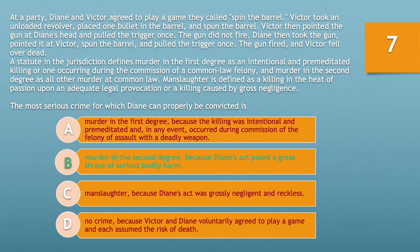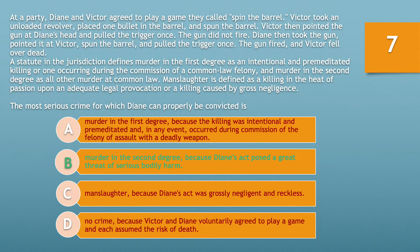If you chose option B — murder in the second degree, because Diane's act posed a great threat of serious bodily harm — you'd be correct. At common law, second degree murder is the intentional killing of another person with malice aforethought. Malice aforethought requires one of the following states of mind: 1. Intent to kill. 2. Intent to commit bodily injury. 3. Depraved heart killing or wanton disregard. 4. Intent to commit a felony. In this case, Diane pointed a loaded gun at Victor and pulled the trigger. This action would clearly satisfy the requirement of a subjective awareness of an unjustified high risk to human life. As such, the most serious crime for which Diane can properly be convicted is second degree murder.